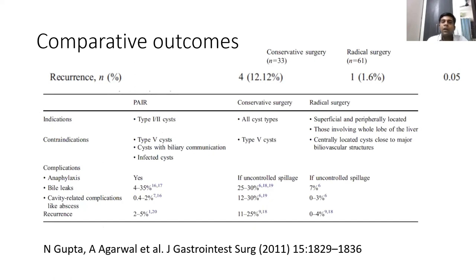From our experience comparing conservative and radical surgery: in our institute, the recurrence rate was as high as 12% with conservative surgery and as low as 2% with radical surgery. In the literature, conservative surgery has recurrence rates of 10–25% and radical surgery less than 4%. Bile leaks and cavity-related complications occur in 10–30% with conservative surgery versus 3–7% with radical surgery.